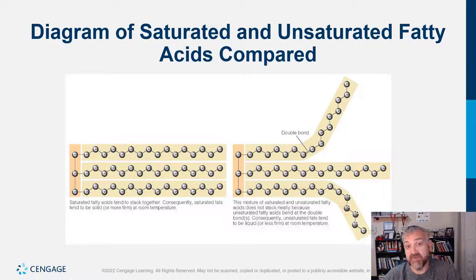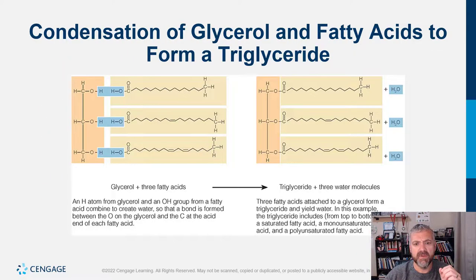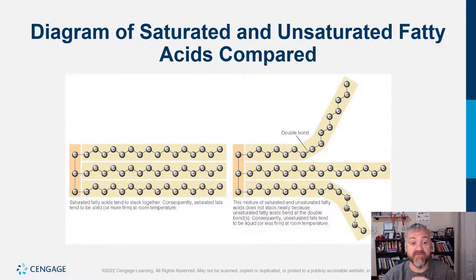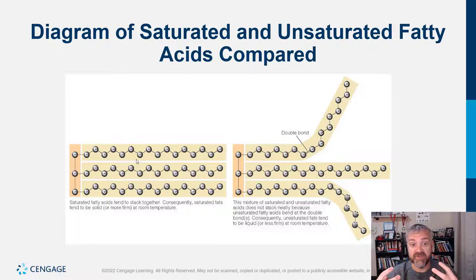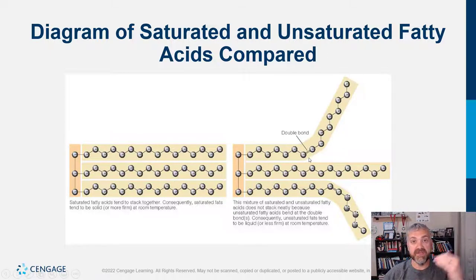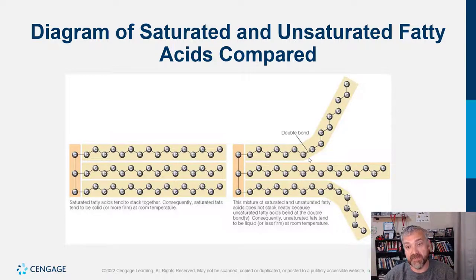Why doesn't a saturated fat have any double bonds? That's where the term saturated comes from. Everywhere there's a carbon in the middle of the chain, there would be two hydrogens — one on each side. A saturated fat is saturated with hydrogen, meaning there's no room for any other hydrogens. On an unsaturated fat, there's a double bond between two carbons because there aren't enough hydrogens — it doesn't have the maximum number of hydrogens, which is why it relies on double bonds.